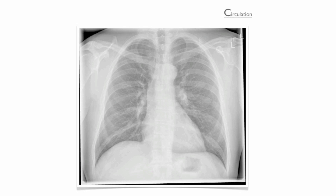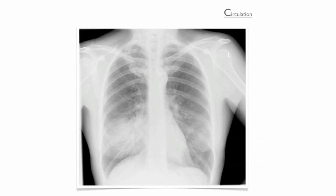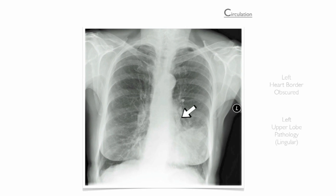In this section of our mnemonic, we review the heart silhouette. Trace the silhouette, paying particular attention to the aortic knuckle and the left and right heart borders. Look for swelling of these borders, which is suggestive of an aortic or ventricular aneurysm. Note that loss of the heart border is suggestive of disease in the adjacent lung lobe. For example, in this image you can see loss of the right heart border caused by right middle lobe consolidation, and loss of the left heart border caused by pathology in the lingular region of the upper left lobe.